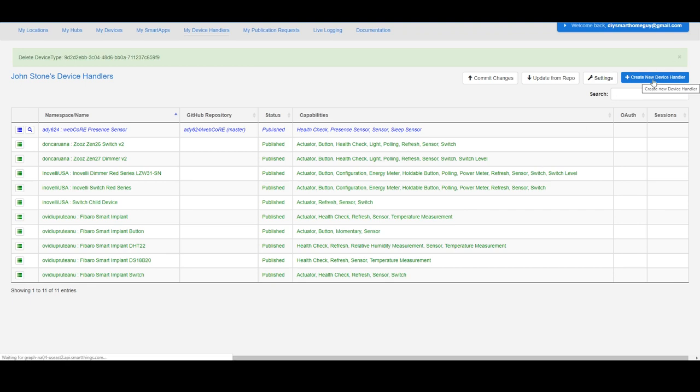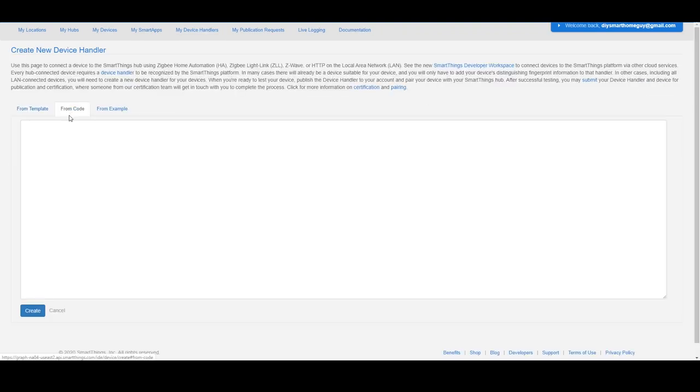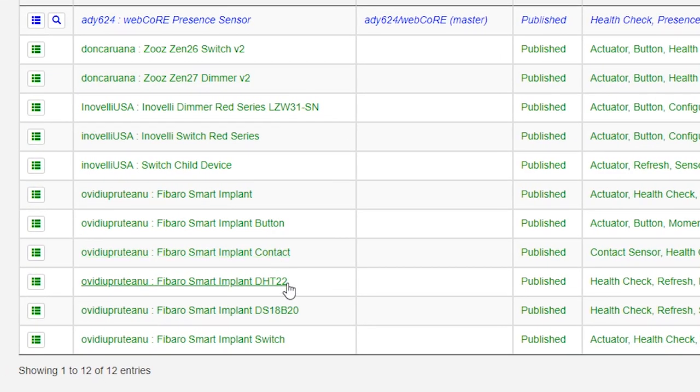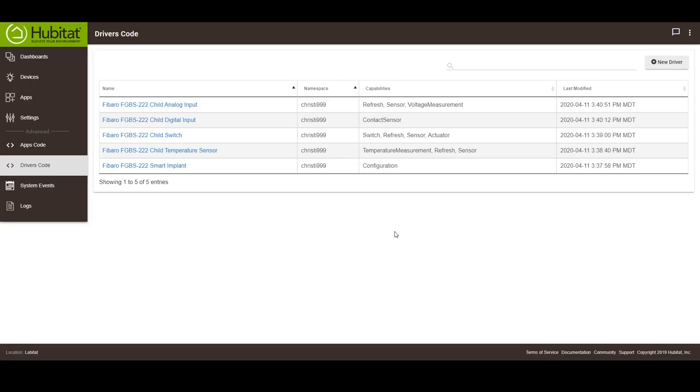So for you SmartThings users, I am using the drivers from Ovidio Proutinou. There's a link to the SmartThings thread and the devices in the description and over on my website. There's a total of six drivers that need to be installed. For you Hubitat users, I'm using the drivers from Christie999. There's a total of five in all. One main driver and four children. You'll want to get all of those installed first. In either case, you'll want to install the main Smart Implant driver first to avoid any errors.